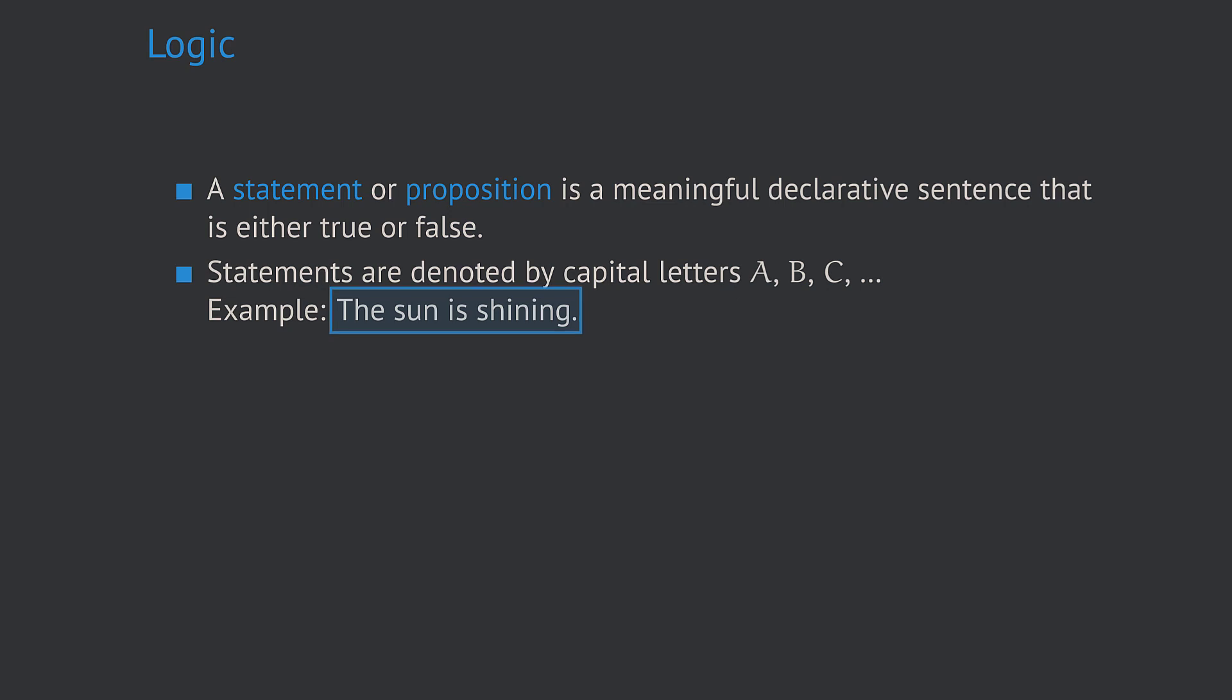The truth of this statement obviously depends on the weather conditions. However, there are other types of statements, typically those referring to mathematical facts, whose truth or falsity never changes. One example might be 'the square root of 2 is not a rational number,' which can be proven to be a false statement.